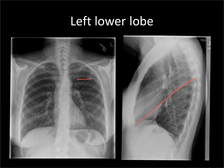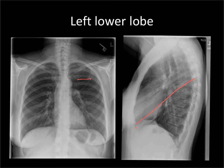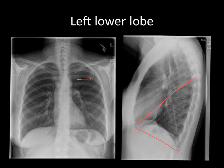The lower portion of the lung comes down well below the level of the domes of the hemidiaphragm. If you draw a line from the anterior costophrenic angle to the posterior costophrenic angle, that gives you some idea of how far the lungs come down. On the frontal radiograph, we're talking about the lungs coming down something like this.